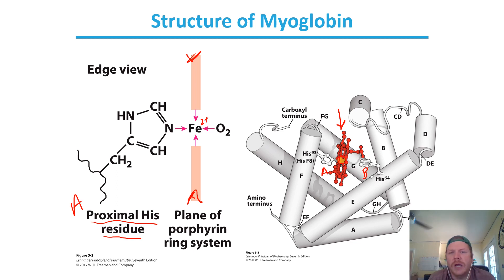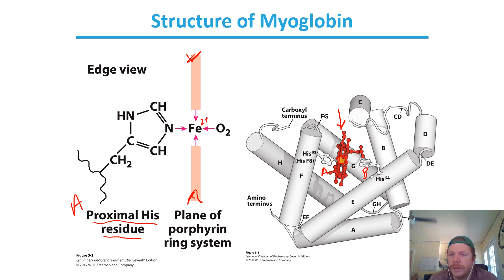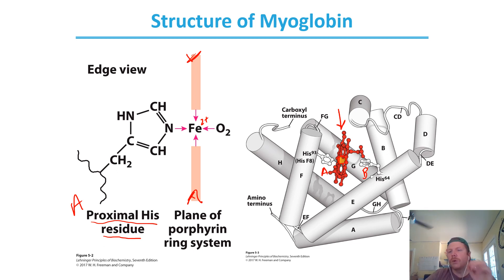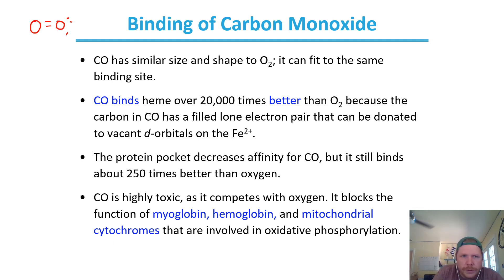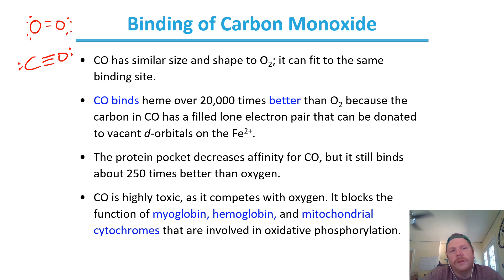Myoglobin stores oxygen, and hemoglobin, which is similar in structure, transports oxygen. The interaction between oxygen and the amino acids of hemoglobin and myoglobin is actually quite low — it is the heme porphyrin ring structure with its central iron ion that is responsible for stabilizing and holding the O2 molecule. Carbon monoxide is similar in shape and size to O2, being a linear molecule with lone pairs of electrons and a triple bond.